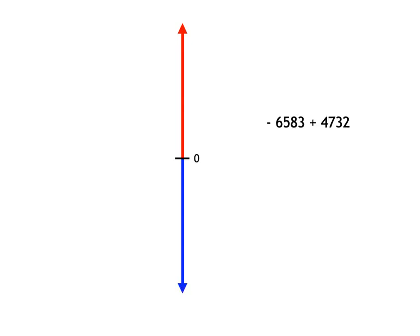And then something like this, you're starting at negative 6,583 and you're only going up 4,732 steps. So you won't get beyond the zero point.